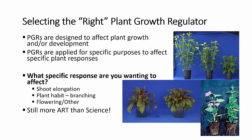First of all, you have to decide what specific response you are wanting to affect. Most of our plant growth regulators are used to control shoot elongation or plant growth. We also want to affect plant branching in a number of cases, and there are some PGRs that affect flowering or some other specific responses.